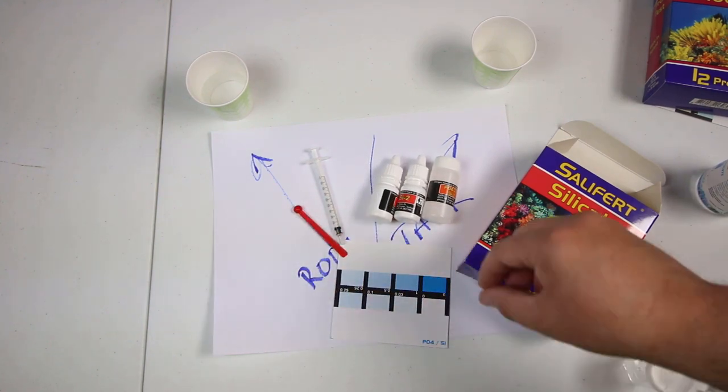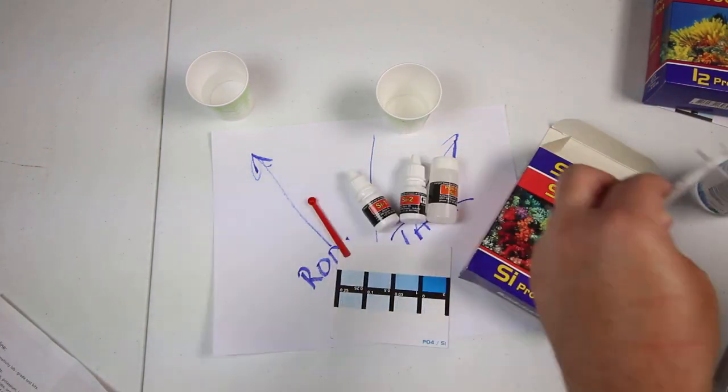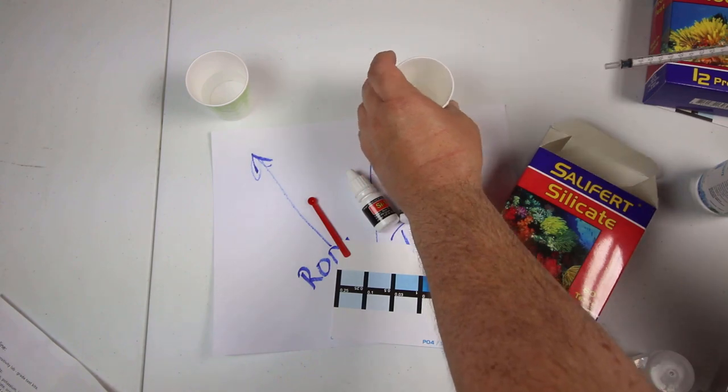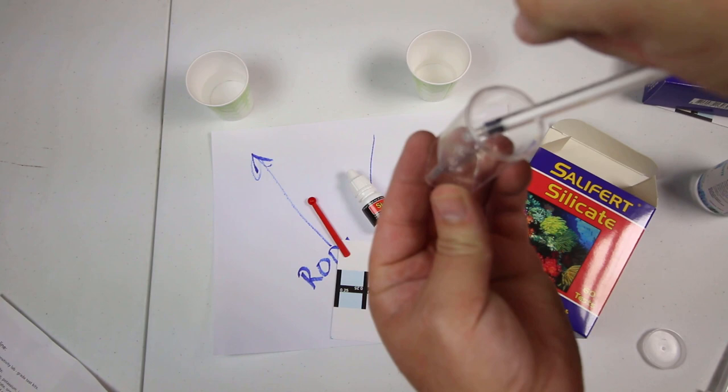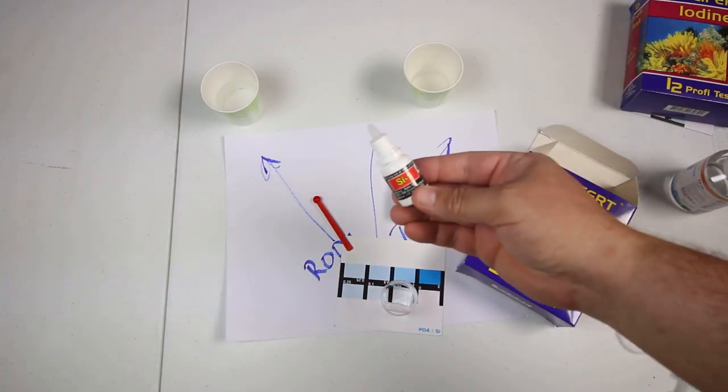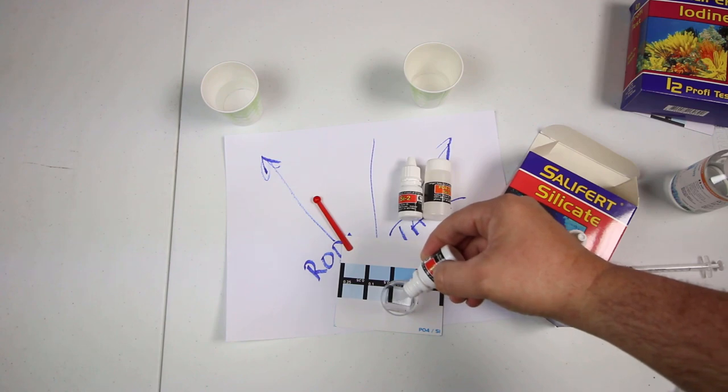So what we're going to be doing first is the tank water. So let's go ahead and get one milliliter of water here. Put it in our container. We're going to start off by adding the SI1. We'll add four drops.